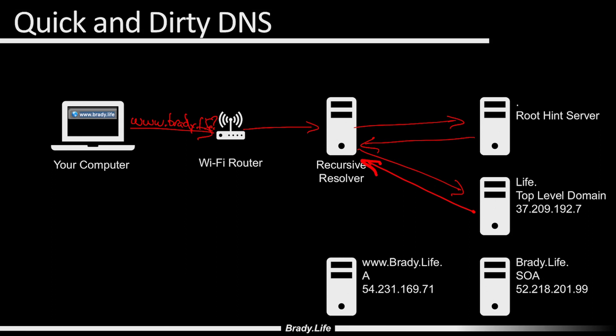Now the recursive resolver is going to go to my start of authority, that DNS server, and ask: hey, where is www? And my start of authority, my domain server, is going to respond and let you know: hey, www.brady.life — the A record for that is at 54.231.169.71. The recursive resolver is going to cache that record so if anyone else asks, it already has the answer. A default TTL period is 72 hours.